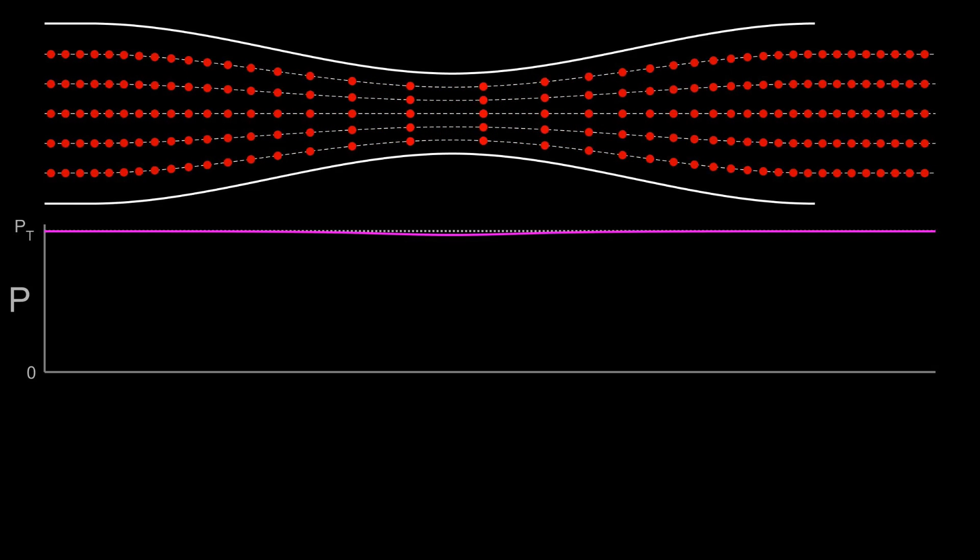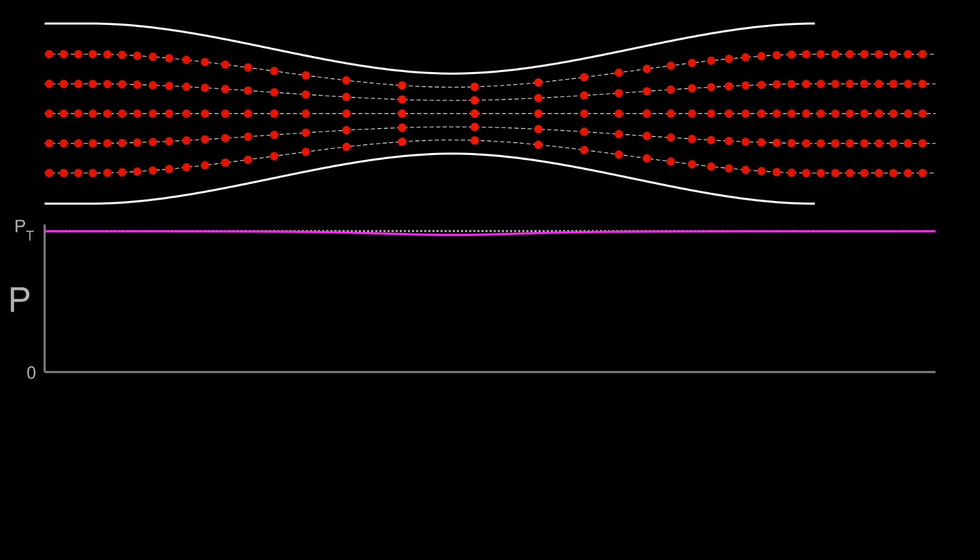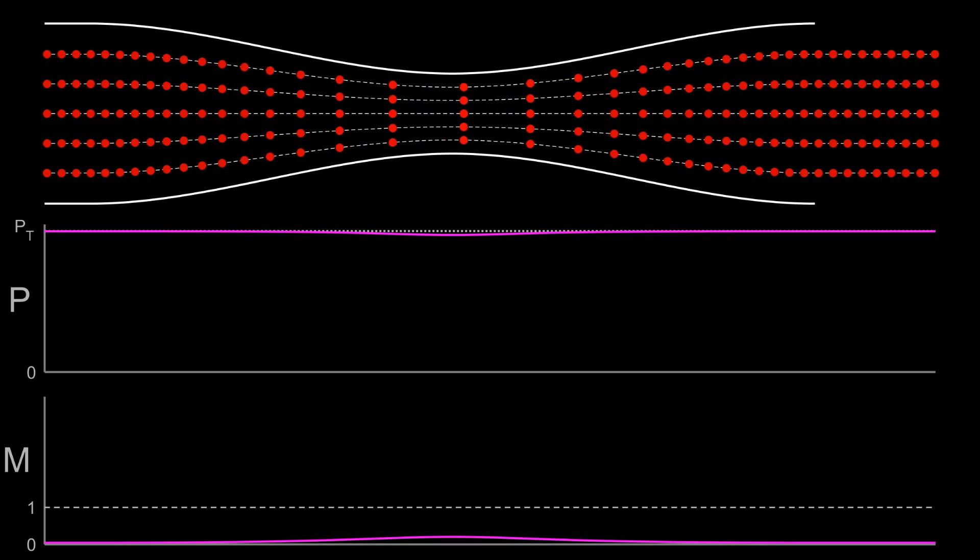For this video, we're not concerned with the total temperature, so we'll just skip straight to the Mach number. The Mach number is the ratio of the fluid speed at a particular location to its speed of sound at that same location. Let's plot the Mach number now. As we expected from the pressure plot, we can see that the Mach number is close to zero everywhere and gets just a little bit higher at the throat.